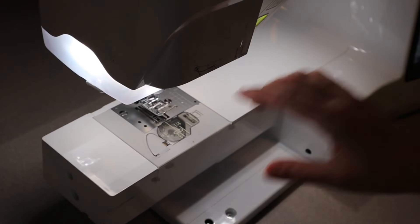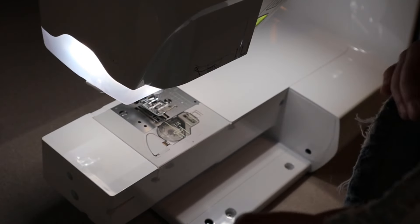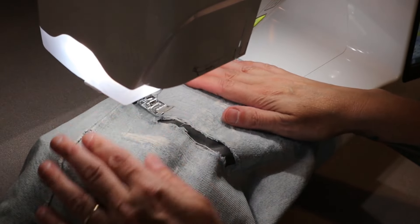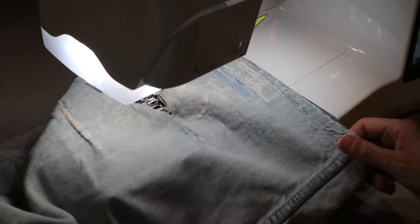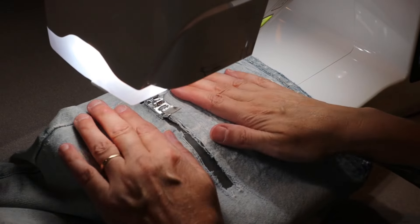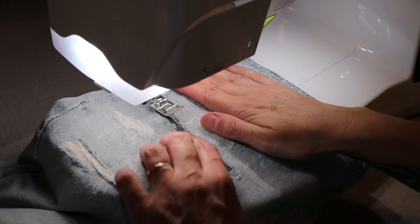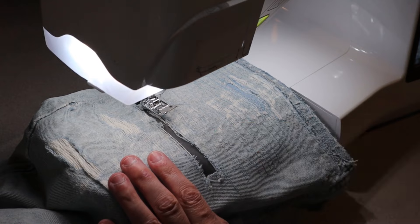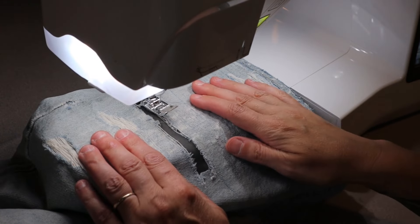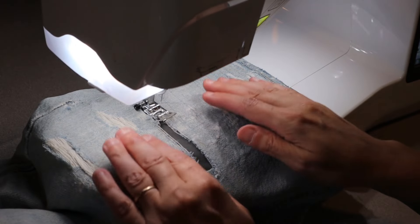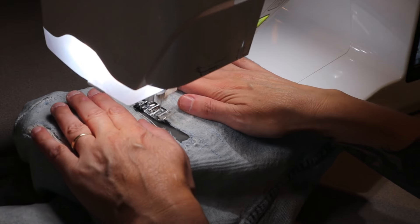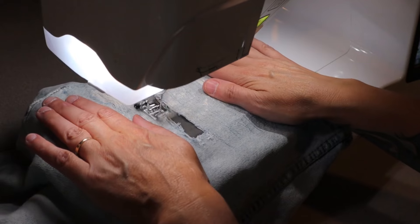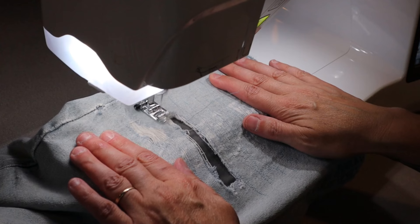We are going to put the leg over the arm of our machine, over the throat. The first thing that I'm going to do is, I'm going to go around the entire hole with the denim nice and flat, so that it's laying like it naturally would. We're going to go all the way around it once, just to kind of tack it down.